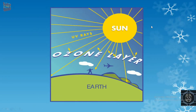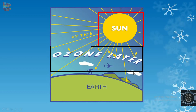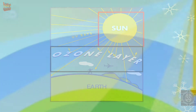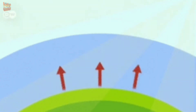Now let's understand it this way. This is our sun, which emits radiation in the form of visible, UV, and IR rays. This ozone layer acts as a protective layer between the sun and the Earth by absorbing harmful radiations. The remaining radiations are sent to the Earth's surface, which re-emits them back to the atmosphere.